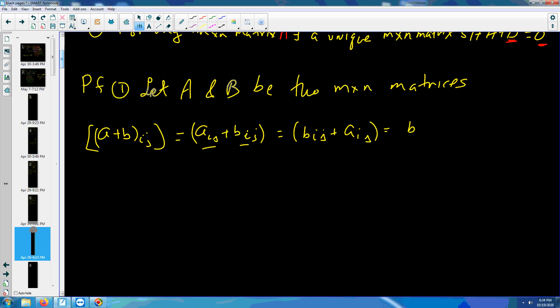They commute. So B ij plus A ij. But this is the same as the ij element of B plus A. And if I show that the ij element of A plus B is the same as the ij element of B plus A, then the two matrices have to be equal. So hence, A plus B must equal to B plus A.